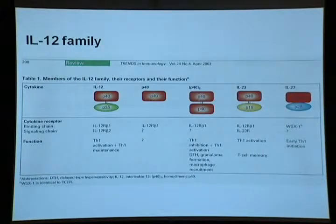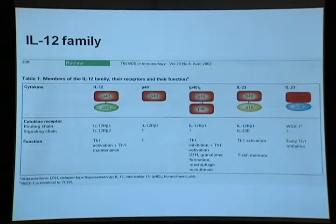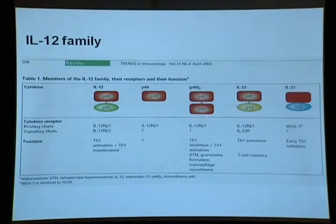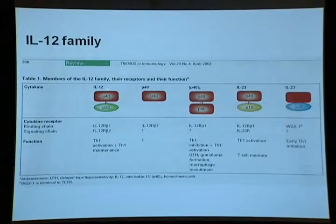Besides IL-1, TNF-α, and the IL-6 group, there is another group — the IL-12 family. IL-12 and IL-23 share the p40 subunit, but IL-23 has the p19 subunit and IL-12 has p35.